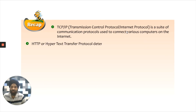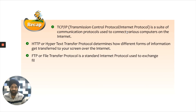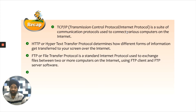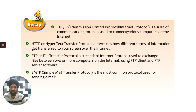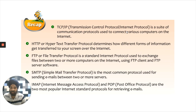HTTP, or Hypertext Transfer Protocol, determines how different forms of information get transferred to your screen over the Internet. FTP, or File Transfer Protocol, is a standard Internet protocol used to exchange files between two or more computers on the Internet using FTP client and FTP server software. SMTP, or Simple Mail Transfer Protocol, is the most commonly used protocol for sending emails between two or more servers. IMAP — Internet Message Access Protocol — and POP — Post Office Protocol — are the two most popular Internet standard protocols for retrieving emails.